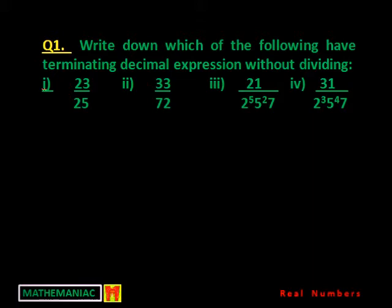Next, we will start with questions immediately because this is not a big chapter. Question number 1: write down which of the following have terminating decimal expression without dividing it — without doing actual division. We used to take a number like 23 divided by 25 and try to identify if the quotient will be terminating or not. So without that actual division you have to determine whether the decimal expression is terminating or non-terminating.